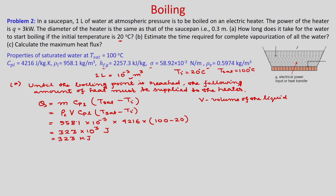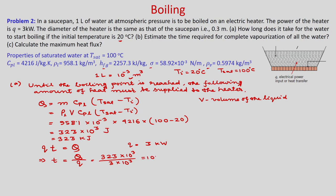The heat transfer rate is Q equals 3 kilowatt. So time equals Q divided by Q-dot, which is 323 times 10 to the power 3 divided by 3 times 10 to the power 3, giving approximately 107.7 seconds for the water to reach 100 degree centigrade.